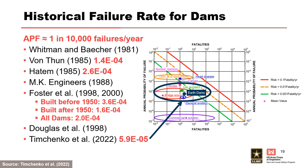This chart shows how the failure rate for dams compares to open pit mine slopes, bridge scour, nuclear power plants, as well as common human factors such as car accidents, airplane crashes, cancer, and heart diseases. This chart was originally developed by Whitman and was most recently updated by Timchenko.